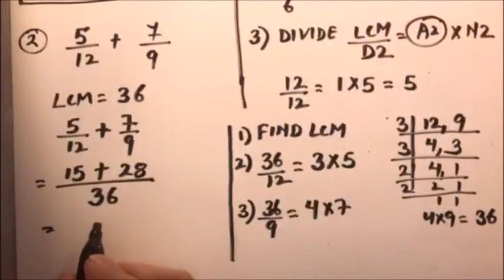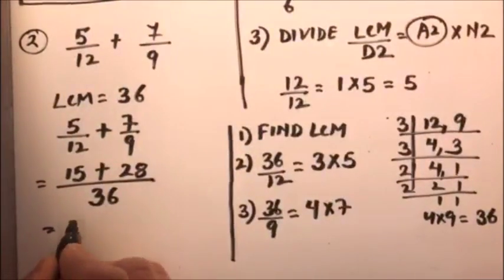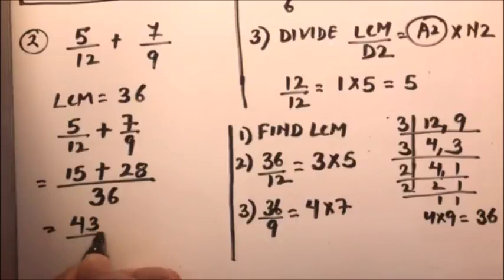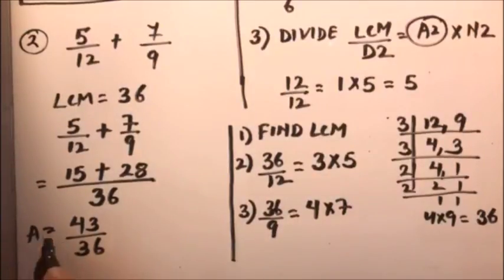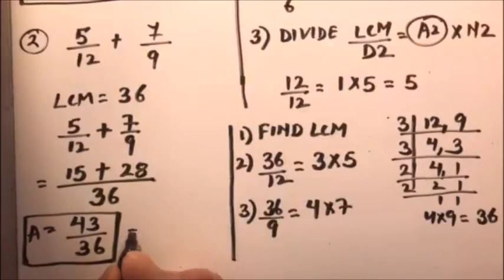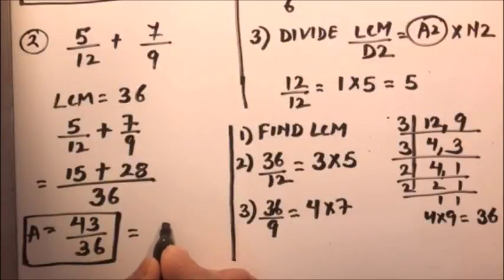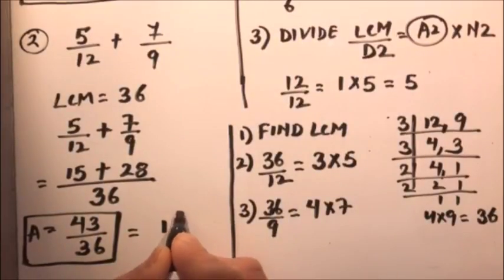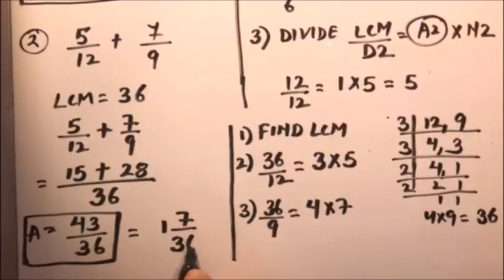Now we add fifteen and twenty-eight to get forty-three over thirty-six. We cannot reduce this further, so our answer is forty-three over thirty-six. If we write it as a mixed number, it is one and seven over thirty-six.